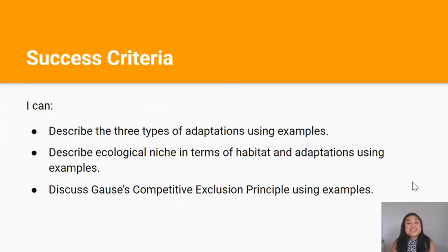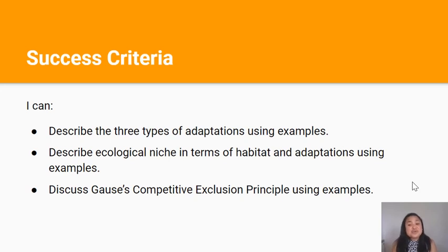You've made it to the end of this lesson. You should now be able to describe the three types of adaptations using examples, describe ecological niche in terms of habitat and adaptations using examples, and discuss Gause's competitive exclusion principle using examples.